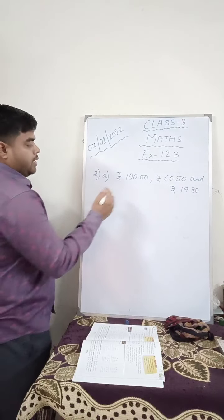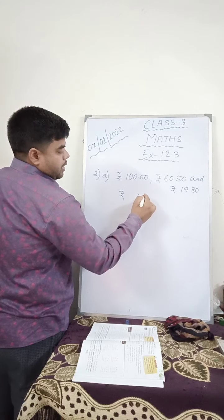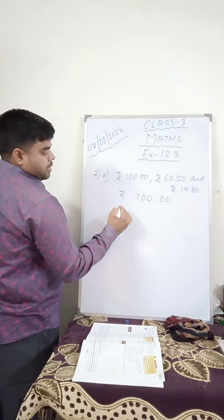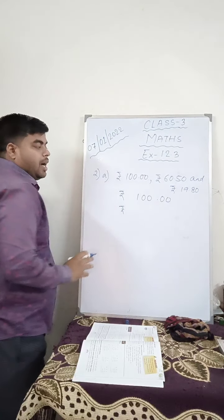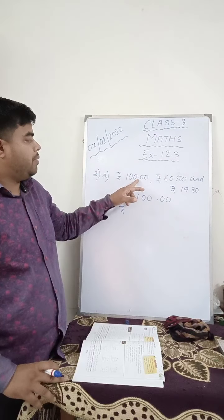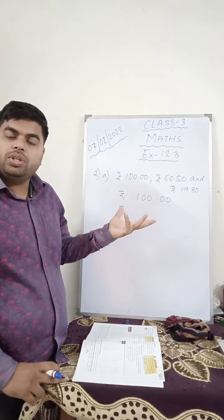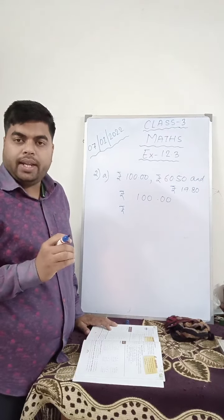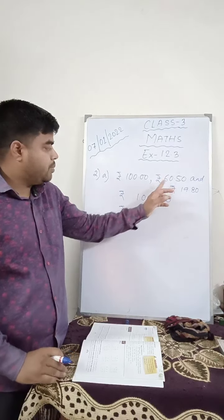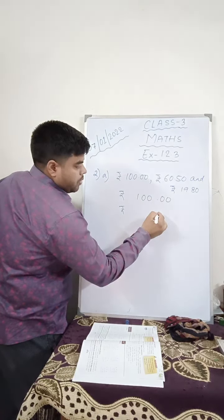You write here only rupees 100.00, you have 60 rupees. Now, this arrangement is very important. Here you see before the decimal 3 digits, but here before the decimal 2 digits. When you arrange them to add or subtract, remember, the decimal has to be in one straight line.